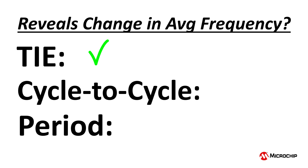Yes, TIE jitter can reveal a change in the average clock frequency because it involves real clock edges being compared versus the edges of an ideal clock, and an ideal clock by definition has constant, unchanging frequency and phase.